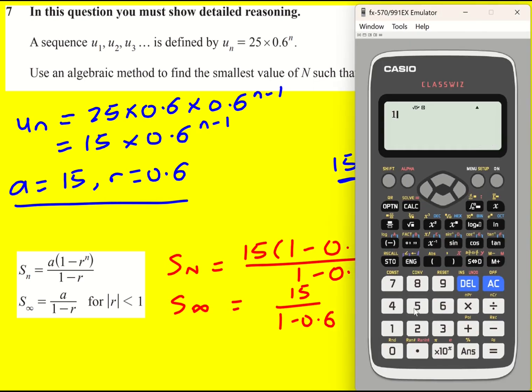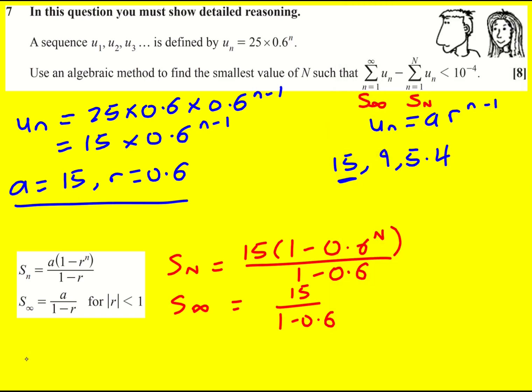So what is 15 divided by that? It's going to be 15 divided by 0.4 and we get 37.5. So okay, maybe I'll write it out.